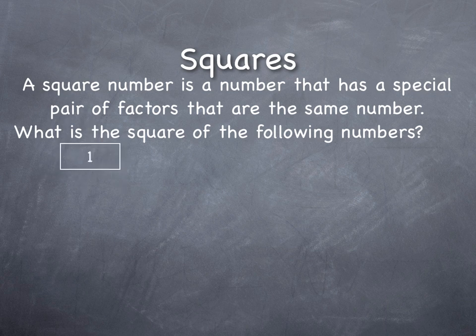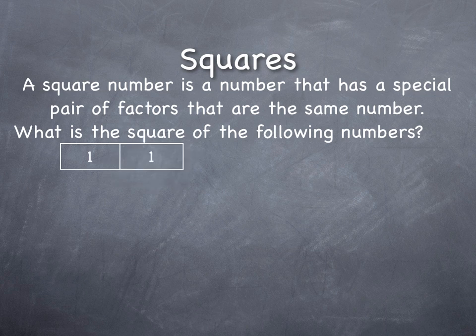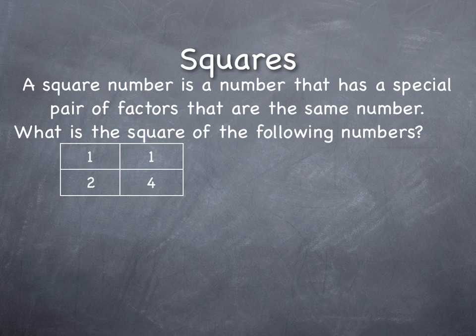One is one times itself: one times one is one. What about the number two? Two times the number itself is four. So four we call a square number. It's two times two, or two squared is four.